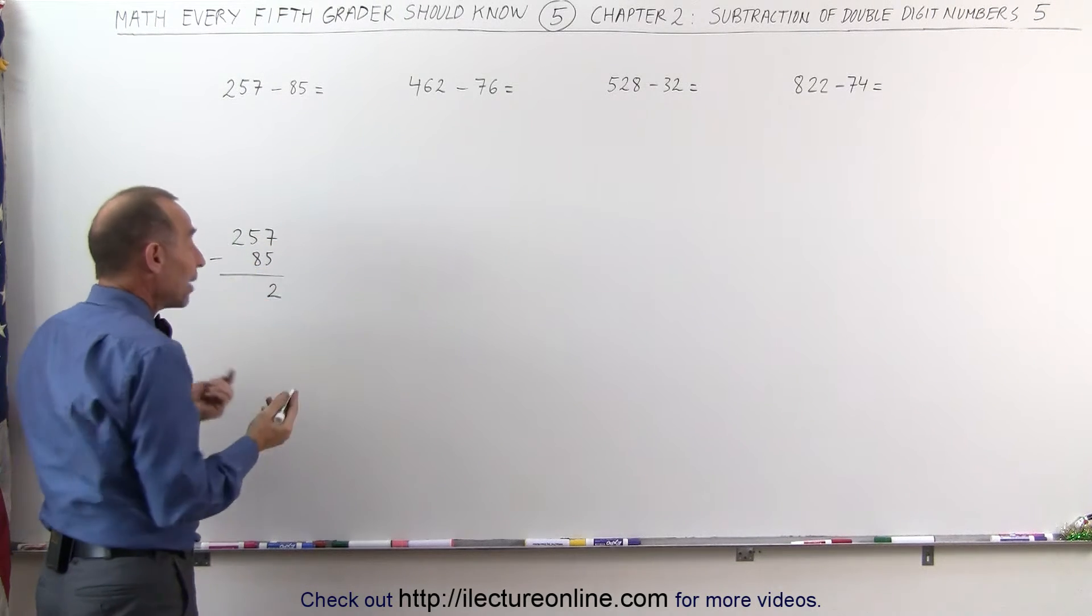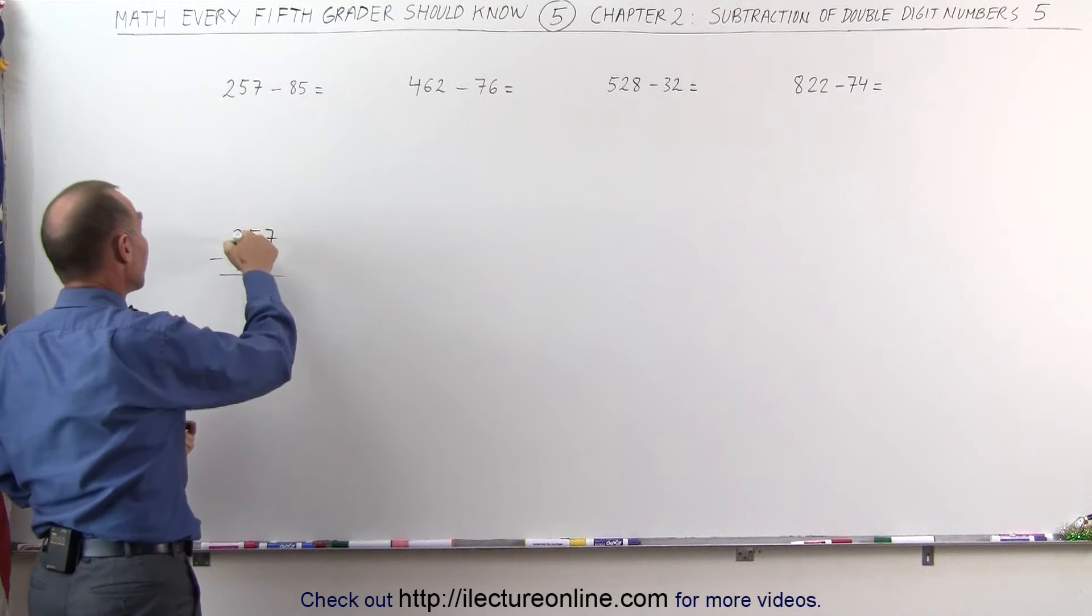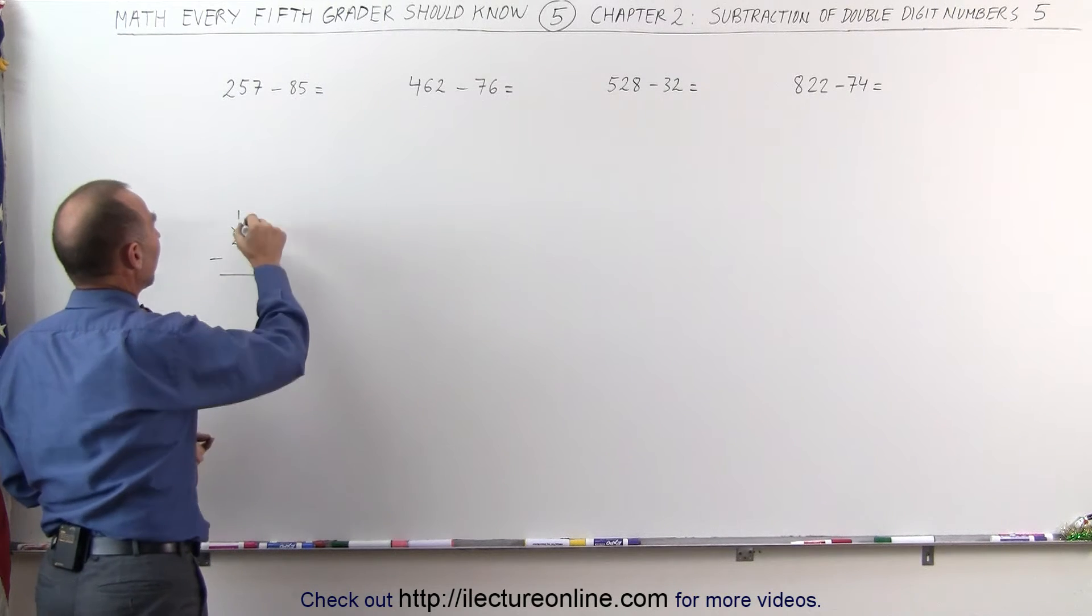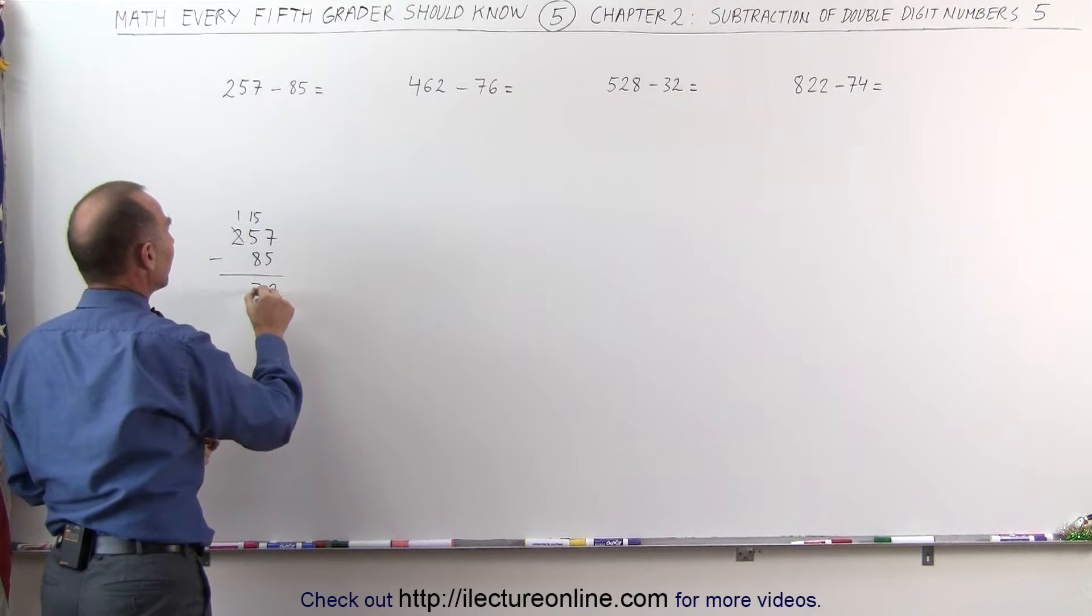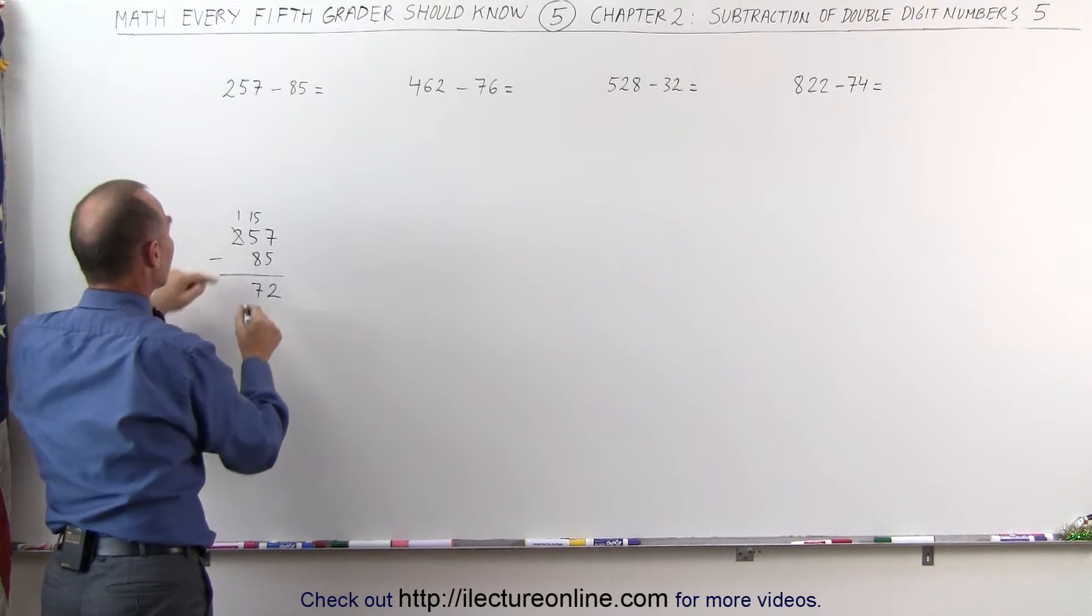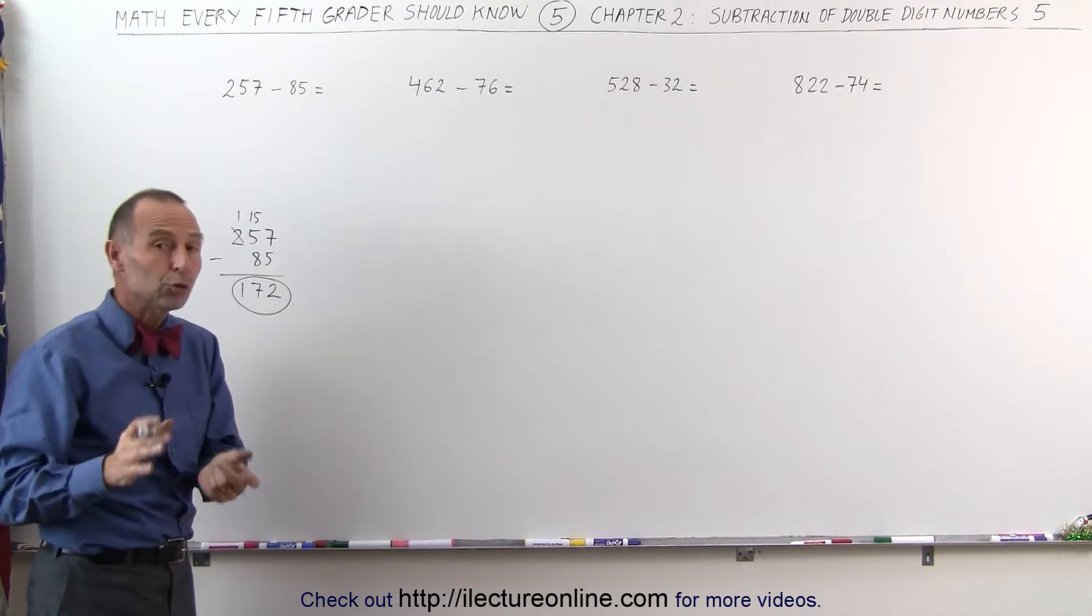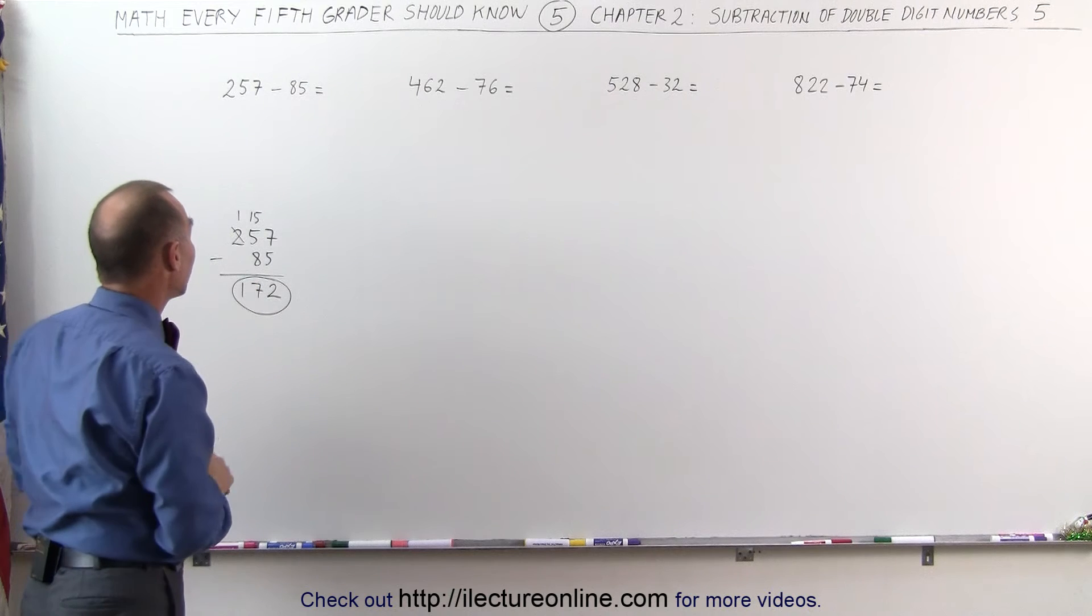5 minus 8, well I can't do that, so I have to go borrow one from the number before. So this becomes, I'm going to borrow one, that becomes a 1 and this becomes 15. 15 minus 8 is 7, and then the remaining 1 minus 0 is 1, and the answer is 172. That's how we would normally do this writing it on a piece of paper.